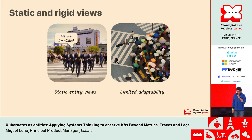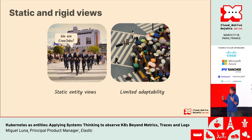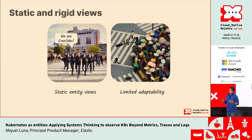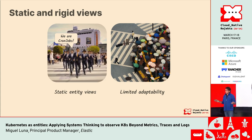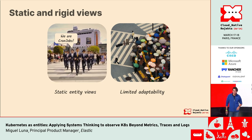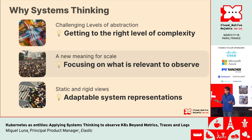The last aspect is static and rigid views. Traditional observability was built for well-defined entities that were not changing — it was more meant for pets versus cattle. Think about instrumenting the Shibuya crossing to read faces: all of a sudden it starts raining, you get umbrellas, and you have to re-instrument everything. So systems thinking can help us with some of these challenges — getting to the right level of complexity, focusing on what is relevant to observe, and representing systems in an easily adaptable way.